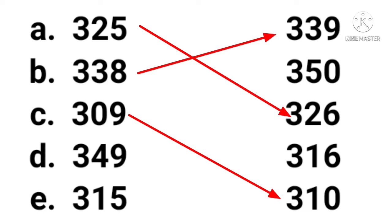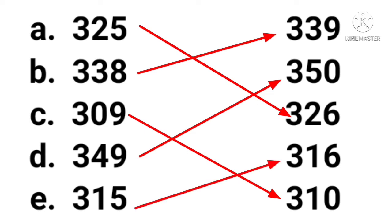The fourth one: three hundred and forty-nine. What comes after three hundred and forty-nine? The next number is three hundred and fifty. The last one — three hundred and fifteen. The after number is three hundred and sixteen. Very good. Superb. Hope you have guessed it.